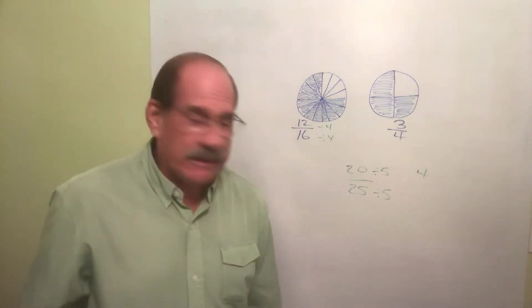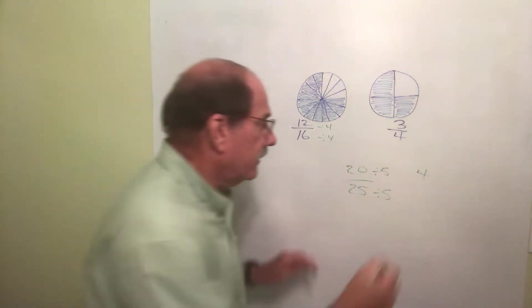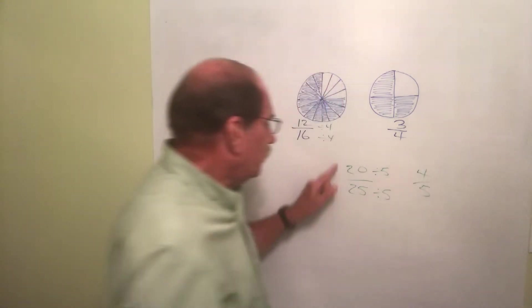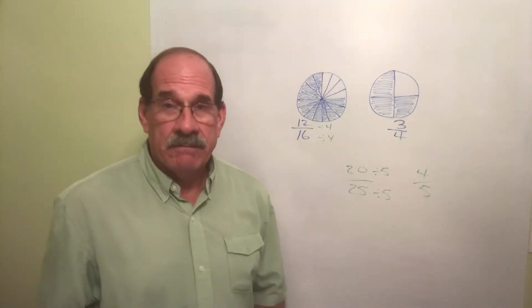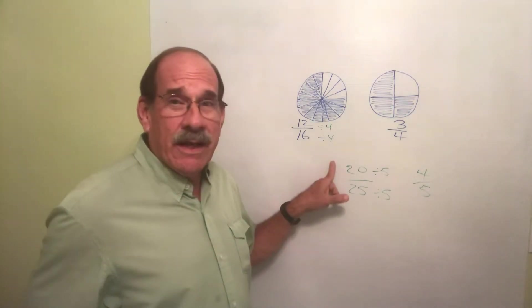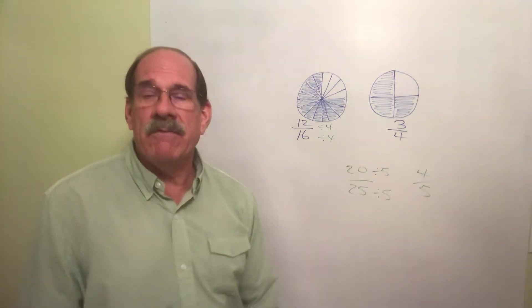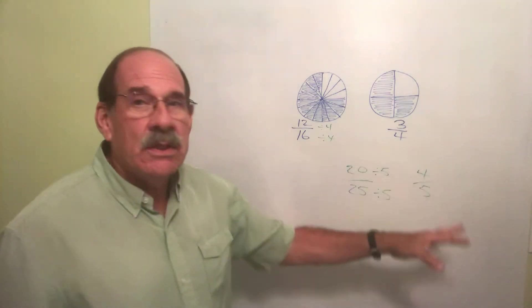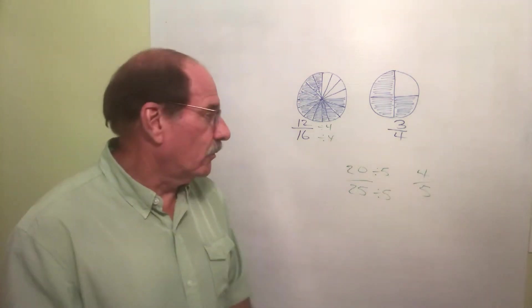If the top gets something done to it, the bottom demands equal treatment. So 25 divided by 5 is 5. So 20/25ths is the same thing as 4/5ths. You cut your pizza into 25 pieces, that sounds kind of stupid and get 20 of them - that's the same thing as cut into 5 pieces and getting 4 of them. I have now reduced to lowest terms.